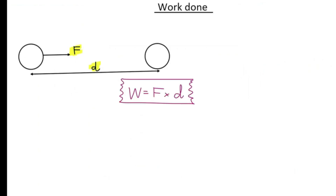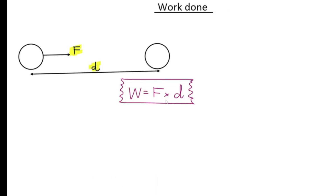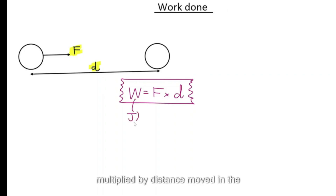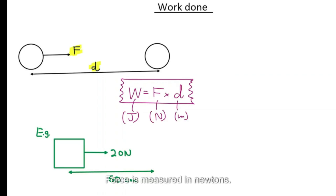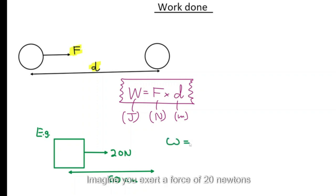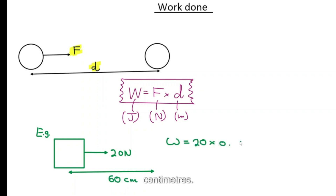In physics, work is done when you exert a force and move something through a distance. The formula is: work done = force × distance moved in the direction of the force. Work is the same as energy transferred, measured in joules; force is in newtons; distance is in meters. For example: 20 newtons over 60 centimeters gives 12 joules.